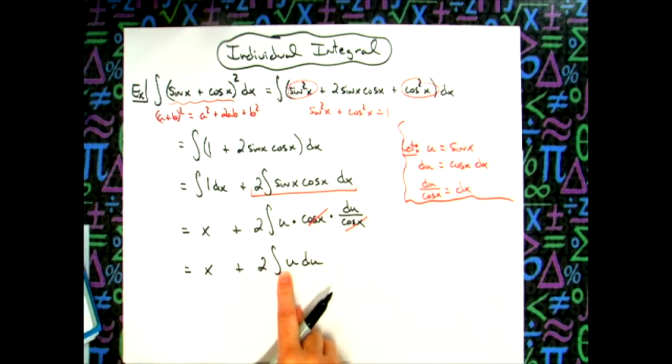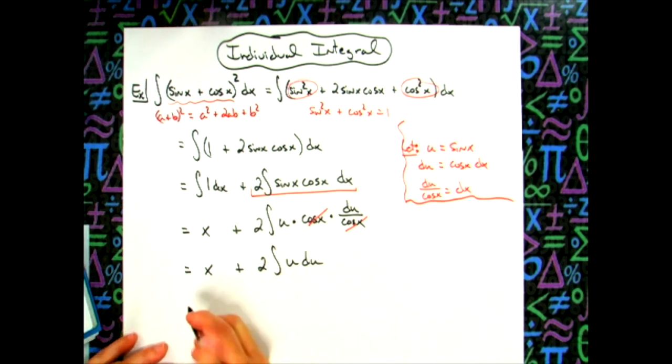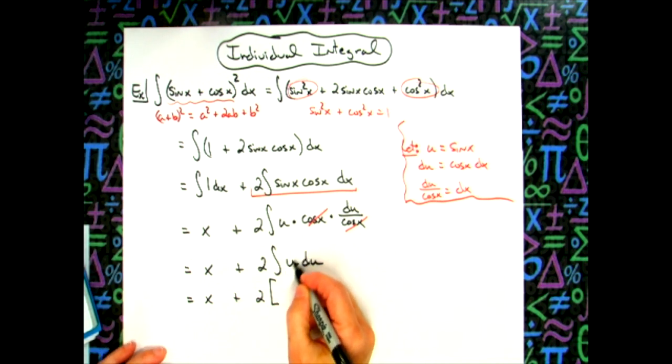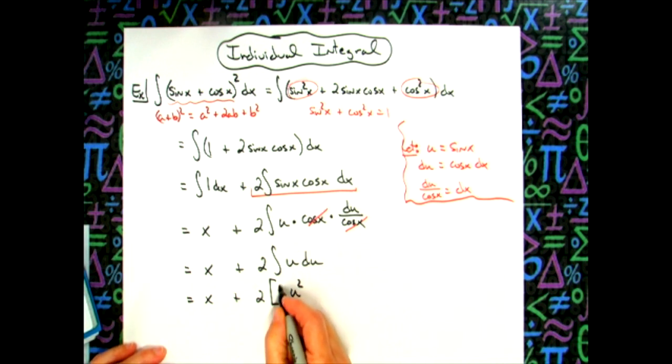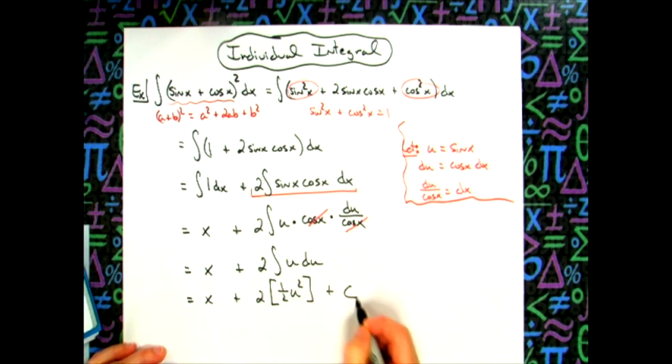Now we are to a place where this is just a straightforward integration. So we'll have x plus 2 times, if we integrate this, we'll add 1 to that exponent. So we'll have u to the second power, and then that'll give us a one half there in front. And then we go ahead and put that plus c because now we have completely integrated both parts.